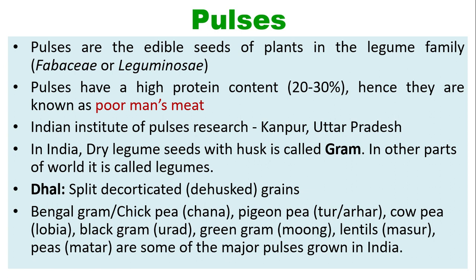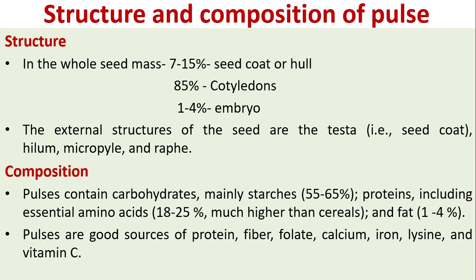Bengal gram (chickpea or chana), pigeon pea (tur or arhar), cowpea (lobea), black gram (urad), green gram (moong), lentils (masur), and peas (matar) are some of the major pulses grown in India.